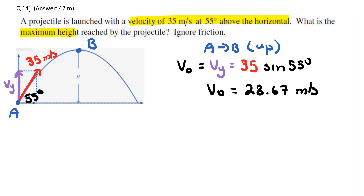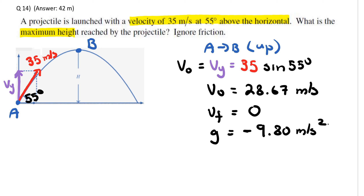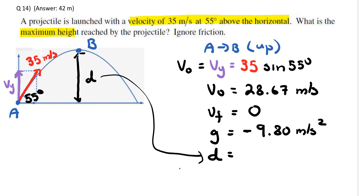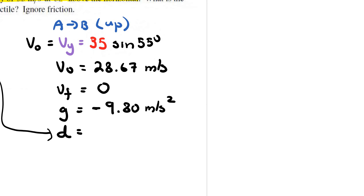At the maximum height at point B, the final velocity is zero. Since we're going up, acceleration due to gravity is negative 9.80 meters per second squared. We want to find the maximum height, solving for distance D. The kinematic equation we'll use is: final velocity squared equals initial velocity squared plus two times acceleration times distance.